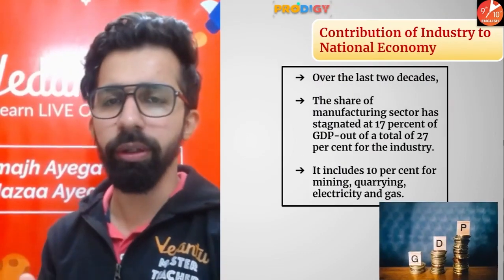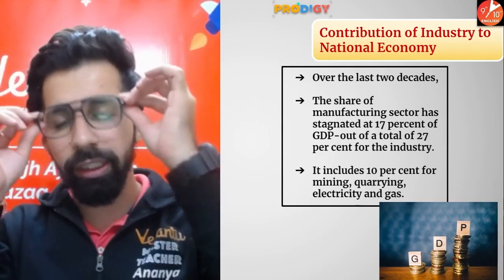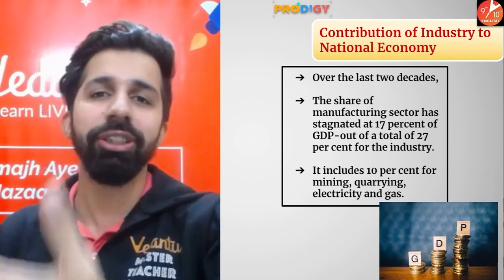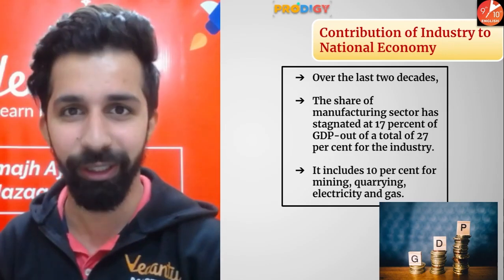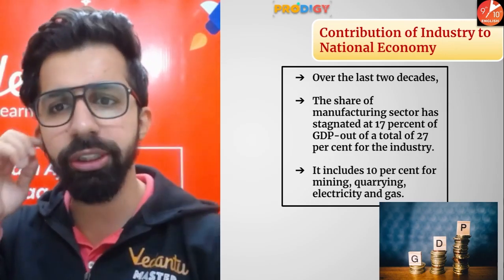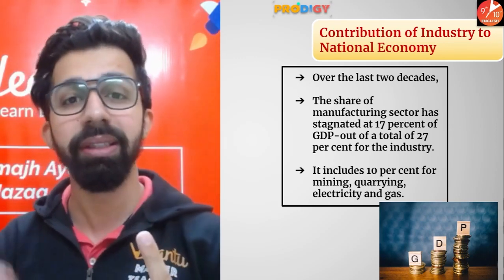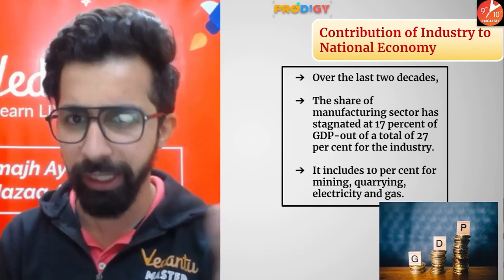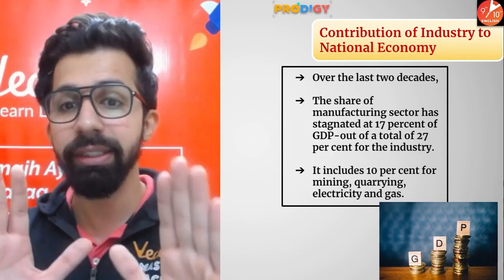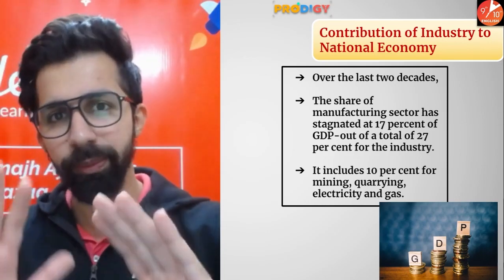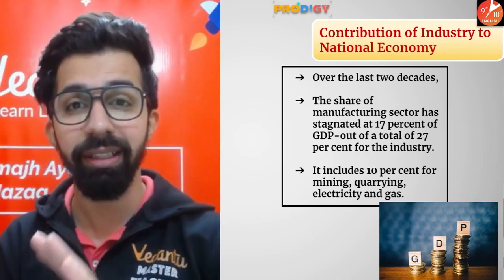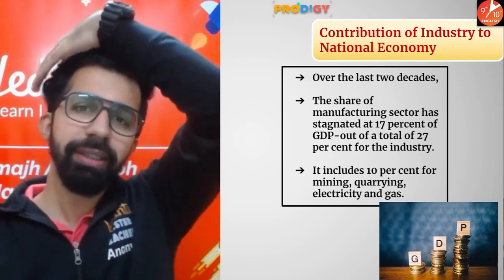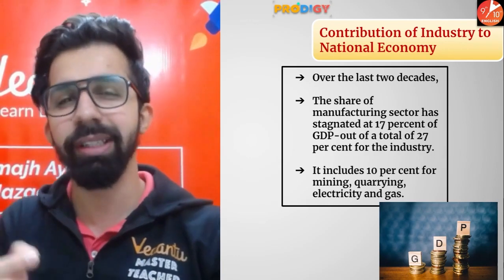This topic is very important — the contribution of industry to national income. Manufacturing industries come under the secondary sector. Over the last two decades — that is, over the last 20 years — the share of manufacturing sector has stagnated. Stagnated means growth has stopped. The share of manufacturing sector has stagnated at 17 percent of GDP, out of the total 27 percent for the entire industry sector.